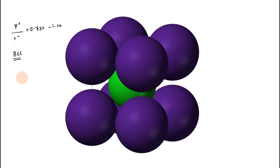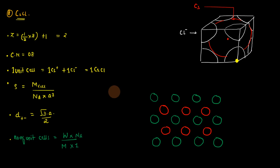In a BCC-type crystal, the smaller ion will be inside a void called a cubic void, and the larger ion will be forming the main lattice point. The problem with cesium chloride is that it cannot be termed as an exact body-centered cube. The reason is that cesium and chlorine have approximately equal sizes, so it looks as if cesium and chlorine are two different unit cells fused together.